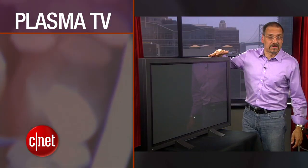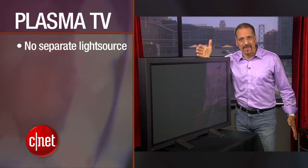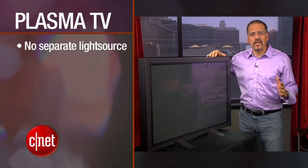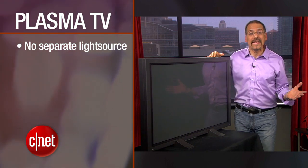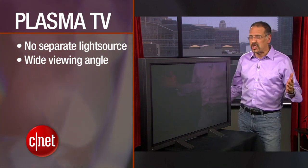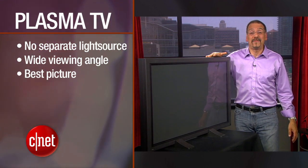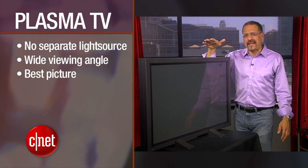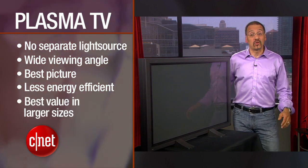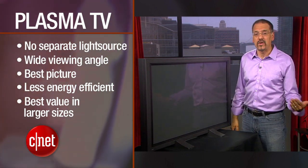Finally, there's plasma. Unlike the LCD TVs we've been talking about, there is no separate light source behind the picture. Instead, every pixel you see is a little tube of glowing gas — or plasma — that emanates light on its own. Unlike LCD, the picture is bright and accurate from just about any viewing angle. And when a plasma TV is really good, it still tends to be the best-looking TV technology out there. These are not as energy-efficient or cool-running as LED LCDs can be. And surprisingly, plasmas are actually the best value in larger sizes, like 42-inch and above, if you shop aggressively.